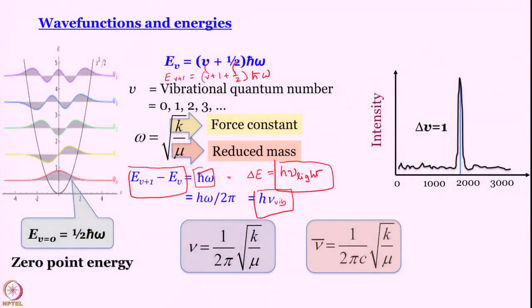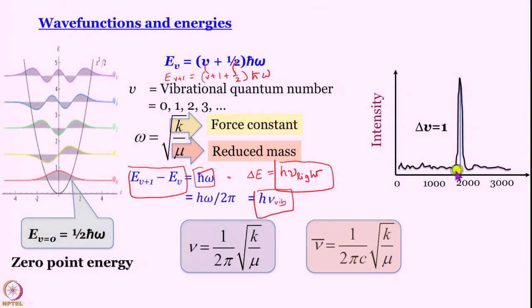What would the spectrum look like? Actually, it would look like this, one single line. Of course, there would be some width and all, but for delta v equal to 1, even if the transitions originated earlier, it does not matter, it will always be just h nu wave. So a single line is expected in the spectrum of simple harmonic oscillator, more so because in any case all transitions begin from v equal to 0 at room temperature. The selection rule is delta v equal to 1.